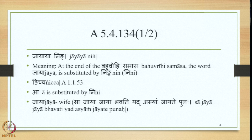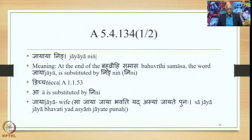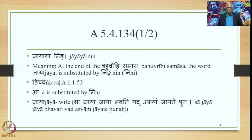We move to Sutra 5.4.134, Jayaya Ning. At the end of the Bahuvrihi Samasa, the word Jaya is substituted by Ning, that is Ni. Sutra Ngicca (1.153) applies: even if the substitute is anekal, if marked with Ng, it substitutes the final vowel only. In Jaya, the final A is substituted by Ni. The word Jaya means wife — Sa Jaya Jaya Bhavati yada Syam Jayate Punaha — 'she is called Jaya in whom he is reborn.'